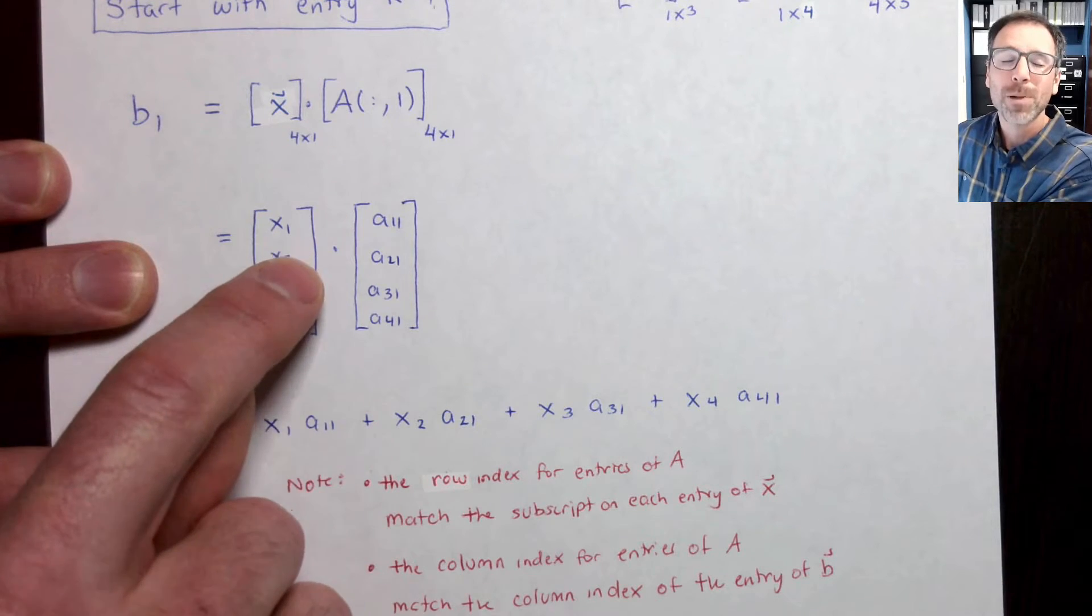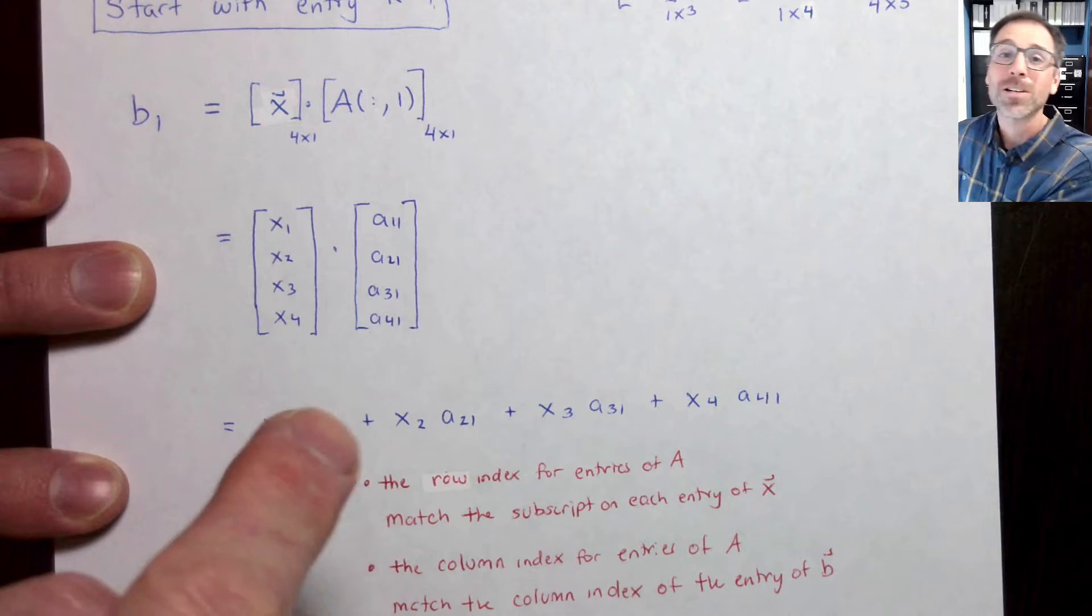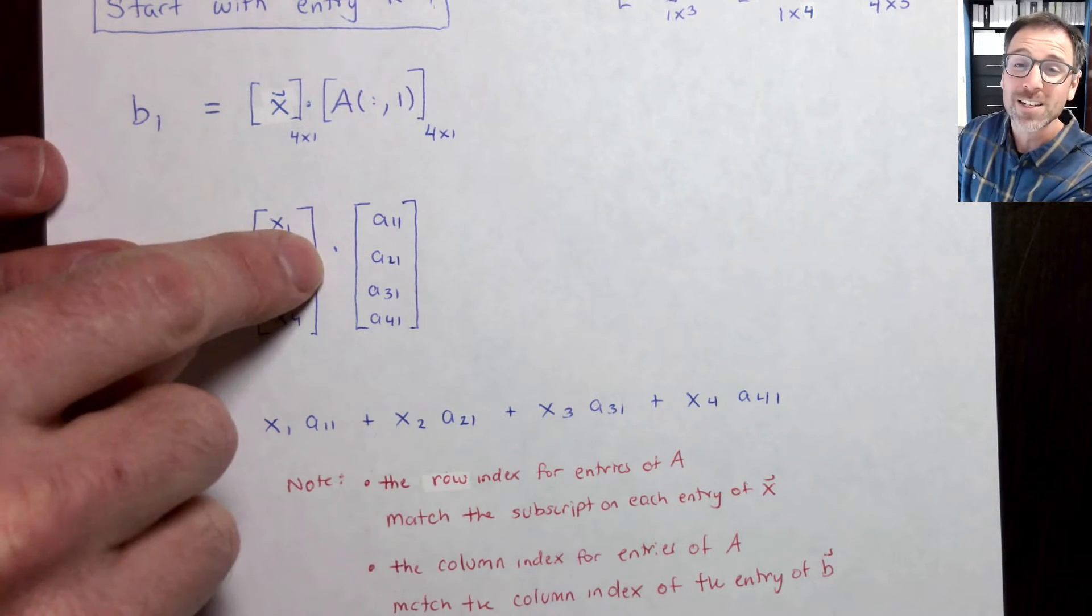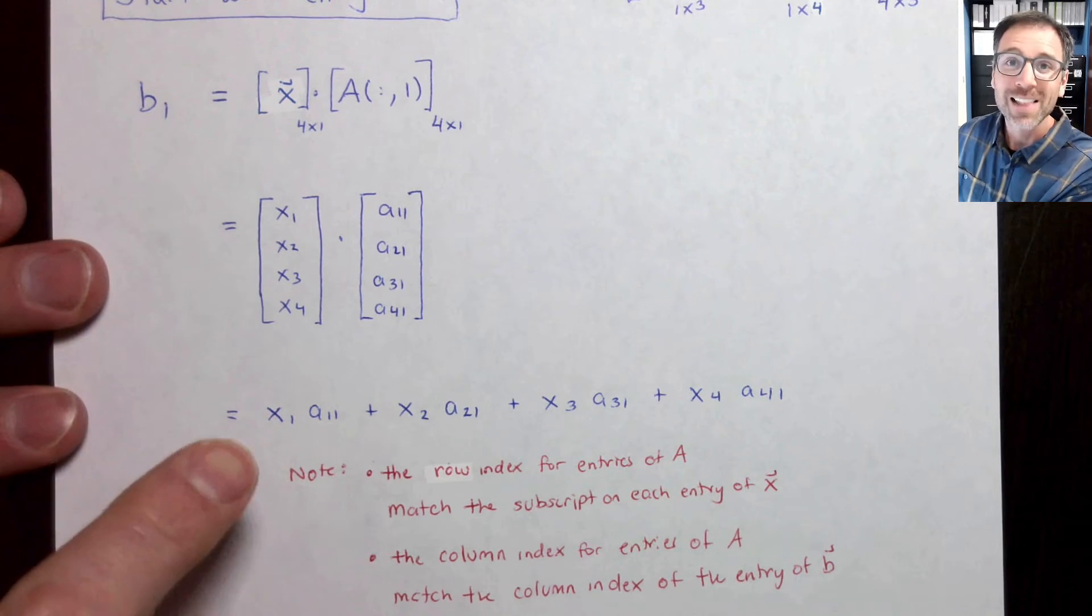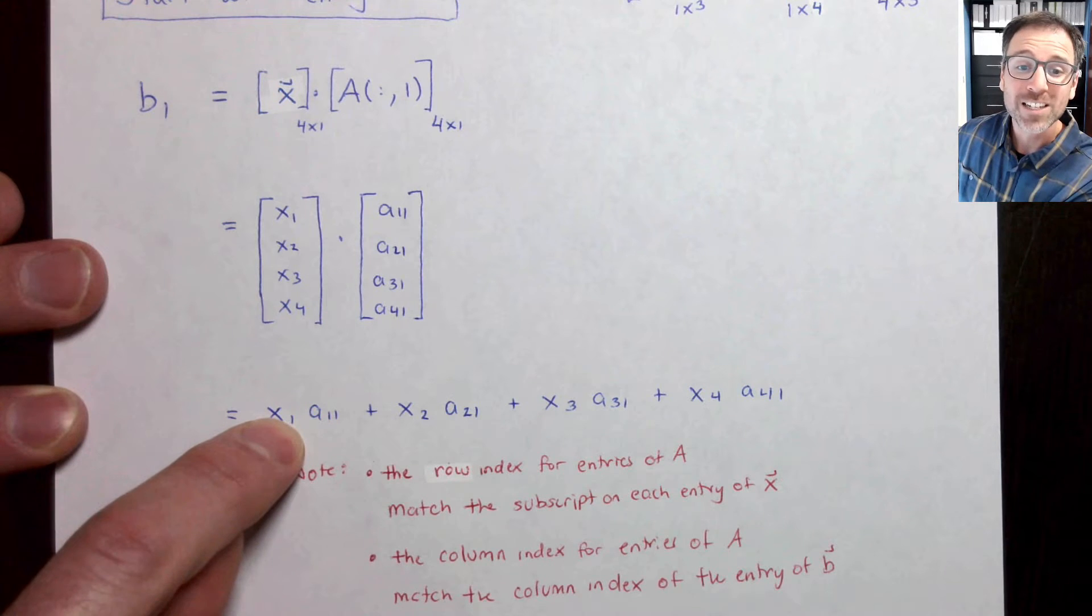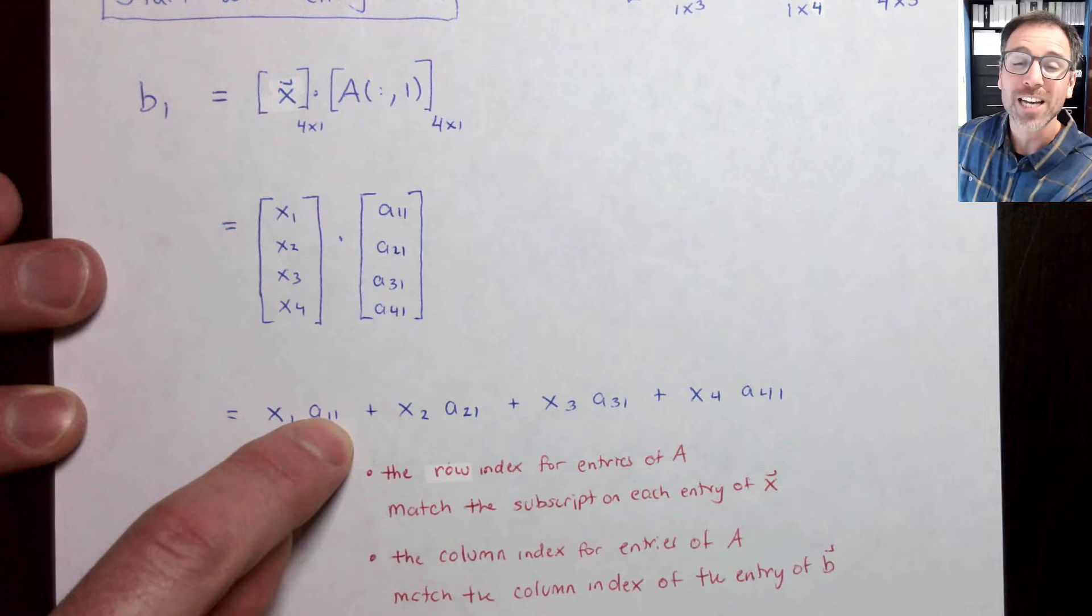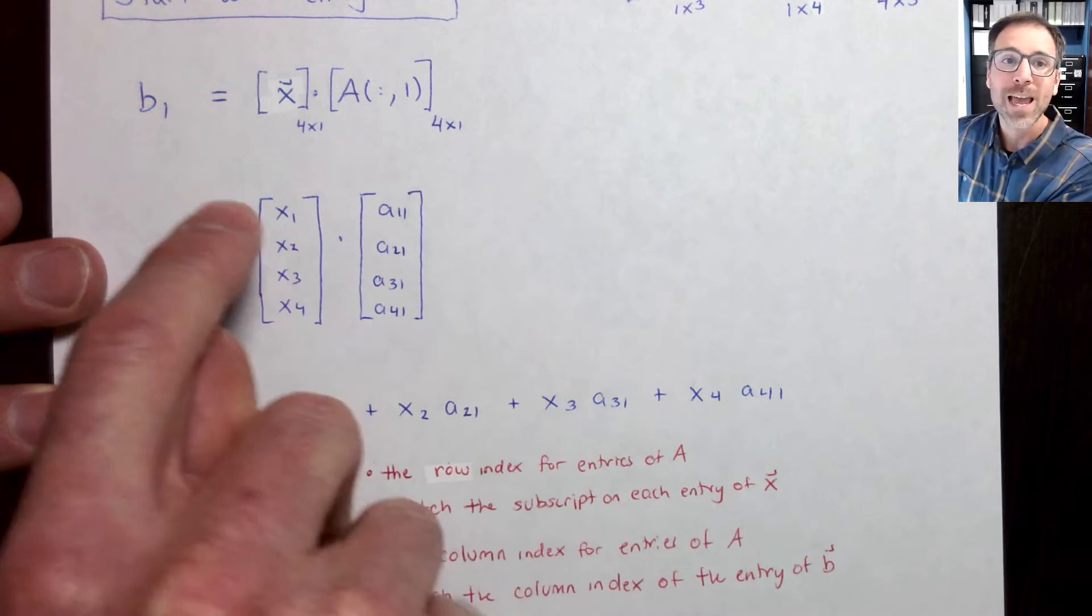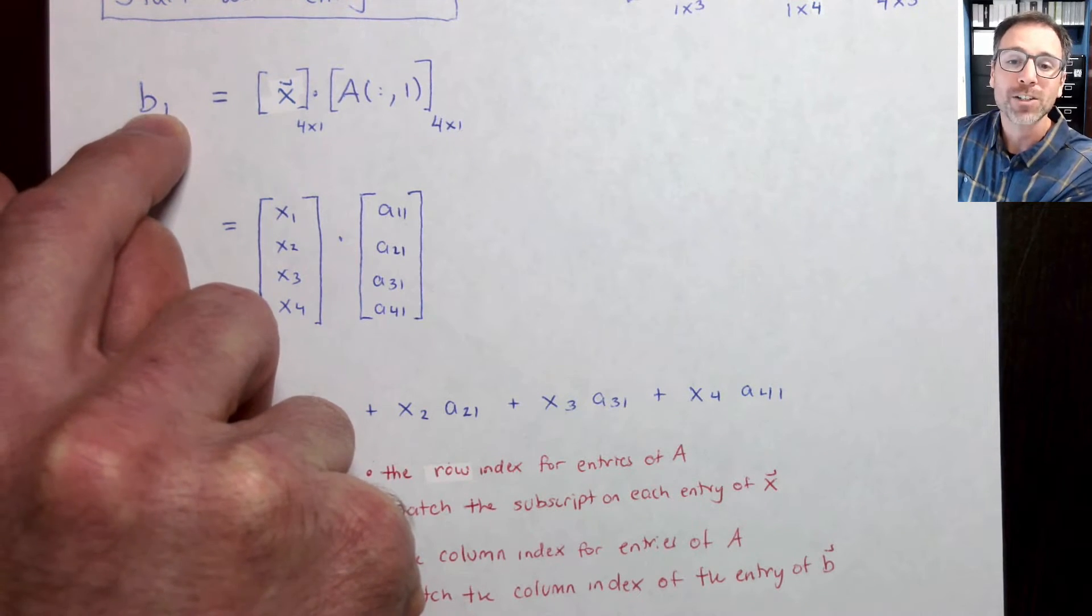When I take that dot product, I multiply the entries in the individual rows. So this is going to be x1 times a11, plus x2 times a21, plus x3 times a31, plus x4 times a41. I close my eyes to show you that I'm not just reading this off the page, I'm actually actively testing myself on what this definition is. Let's continue to develop our verbal descriptions here. Notice that the index on each entry of x matches identically the row index on each entry of A, and the column indices on the individual entries of A match the entry number on the output vector b.